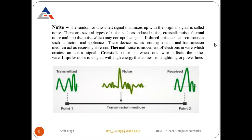Thermal noise is the movement of electrons in a wire which creates extra signals. The electrons moving within the wire can move very fast or very slow. When they move very fast, they produce some extra signals. These extra signals create some type of noise, and this noise is known as thermal noise. Crosstalk noise is when one wire affects another wire and creates extra signals on the other wire.